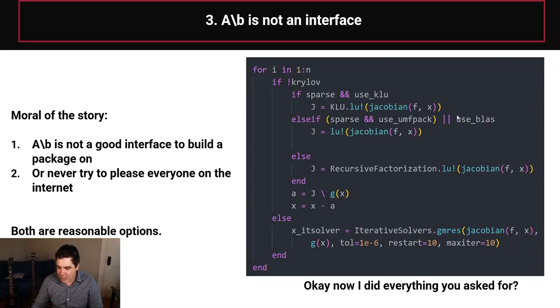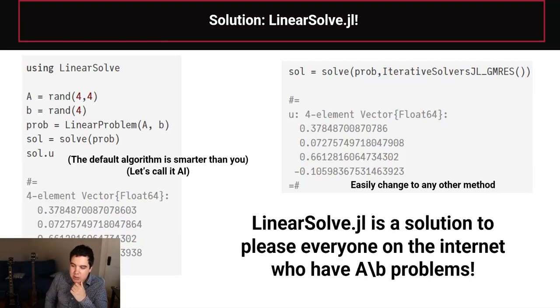backslash is not a good interface to build things off of, because you'd have to handle a lot of details. So you either have to just take that as is and just handle every detail, or you can just try to not please everyone on the internet and just say, this is how it is. These are options I have and go home. Both are reasonable options. And what I want to tell you is that LinearSolve is the solution to how you can handle this complexity with all the linear solver choices. So LinearSolve.jl is a solution to please everyone on the internet who has A backslash B problems.